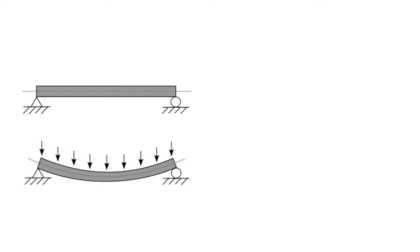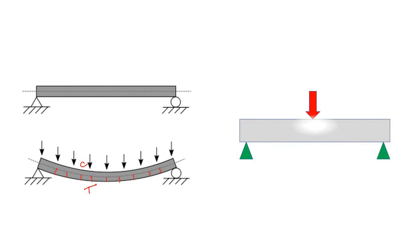The very first thing I would like to explain is what will happen if we apply a load on a beam. Simply, it will bend. At the bottom it is tension and at the top it is compression. Concrete is very much weak in tension, so a crack is going to occur at the bottom. To resist this crack, you have to provide some reinforcement.